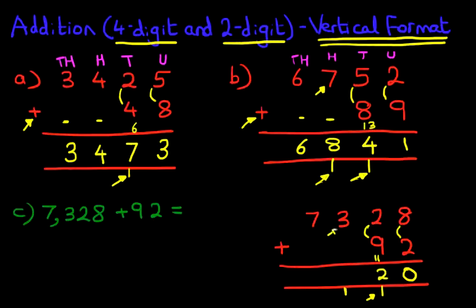Now we've got the hundreds. We've got 3 plus 0, which is 3. But we've got 1 here. So we can write 3 here if necessary. 3 plus 1 is 4. The thousands remains the same, because we're adding nothing. So 7,328 plus 92 is 7,420.